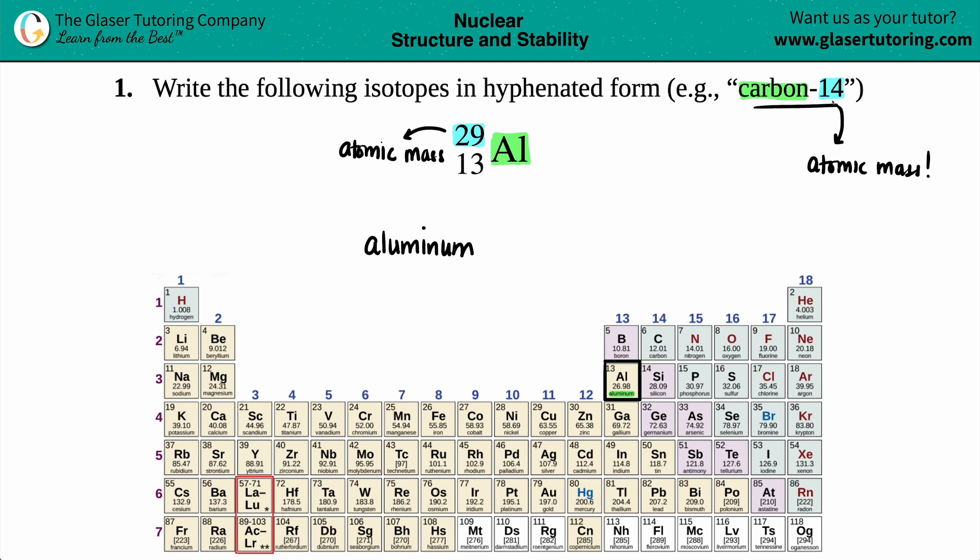So this could have been carbon-12, carbon-13, carbon-14. And in our example, we have aluminum-29. And that's it. That's the answer for this one.